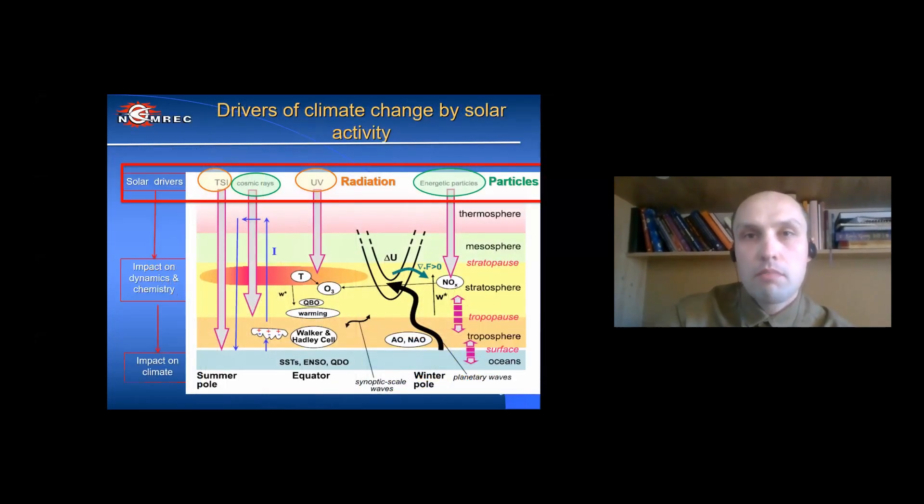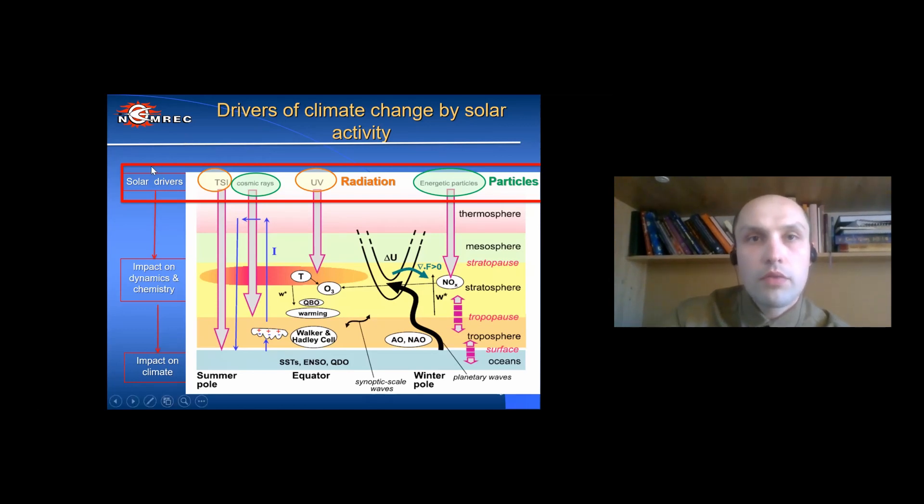And now we will talk directly about the influence of the Sun on the climate and what are the mechanisms of the influence. There are three broad categories: changes in the total solar radiation, ultraviolet radiation and galactic rays. A mechanism of variation in total solar radiation directly affects the troposphere.